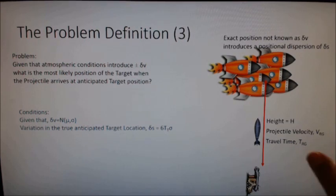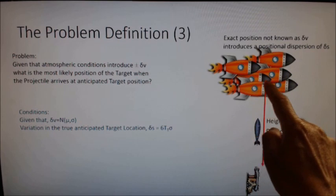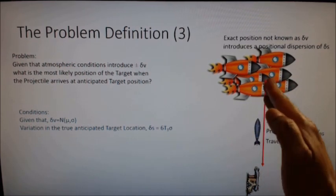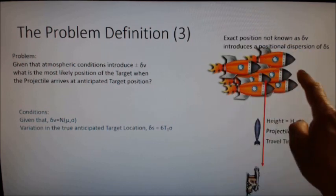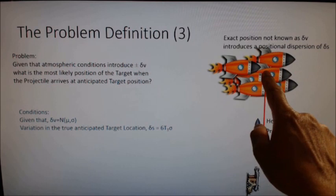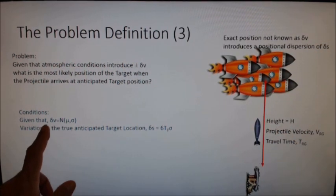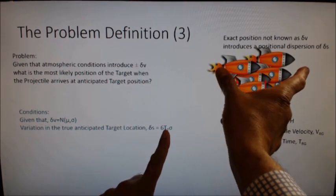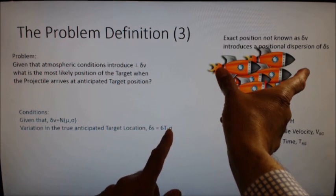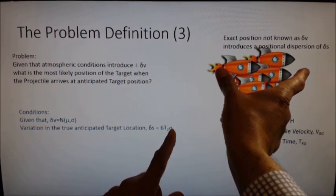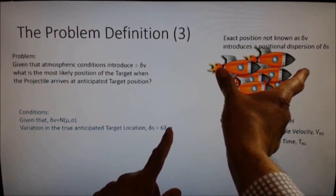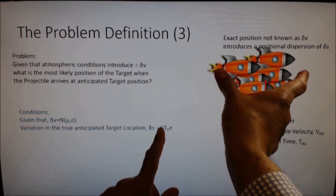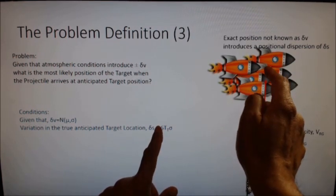The third part of the problem definition is to estimate where the likely position of the target is when this projectile arrives at this point. Of course, there can be some variations in the projectile velocity, but we want to keep things simple. We are just looking at the velocity variation in the direction of the travel of the target. Now, delta V is modeled by a normal distribution mean mu and standard deviation sigma, which gives us plus or minus three sigma. The variation in the location is six times the travel time times the sigma. So that gives us the spread of the possible locations, anticipated location, possible locations of the target by the time the projectile arrives at this anticipated location.